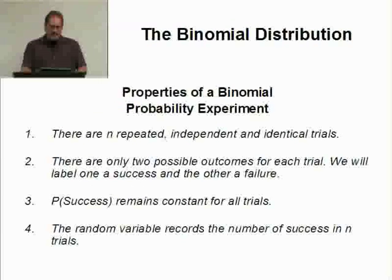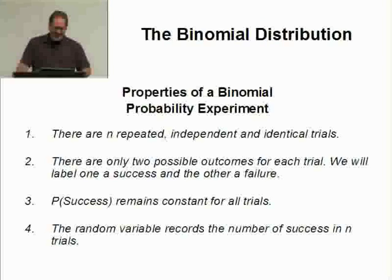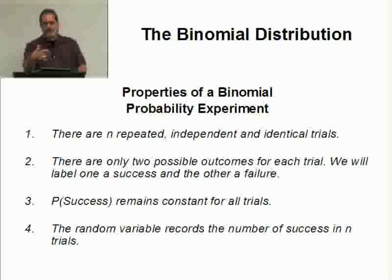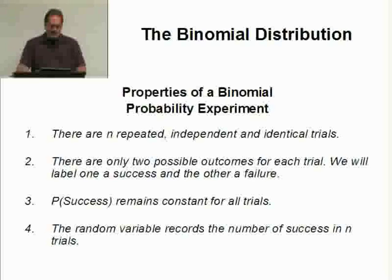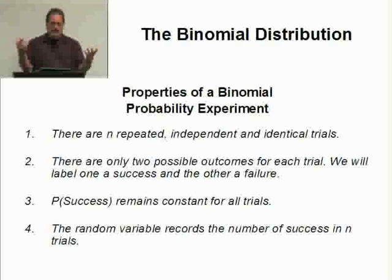Let's take a look at some properties of a binomial probability experiment. First, there are n repeated, independent, and identical trials. There are only two possible outcomes for each trial — we label one outcome as a success and the other a failure. The probability of a success remains constant for all trials. And the random variable — whatever we happen to use, x, y, t, w — records the number of successes in n trials.